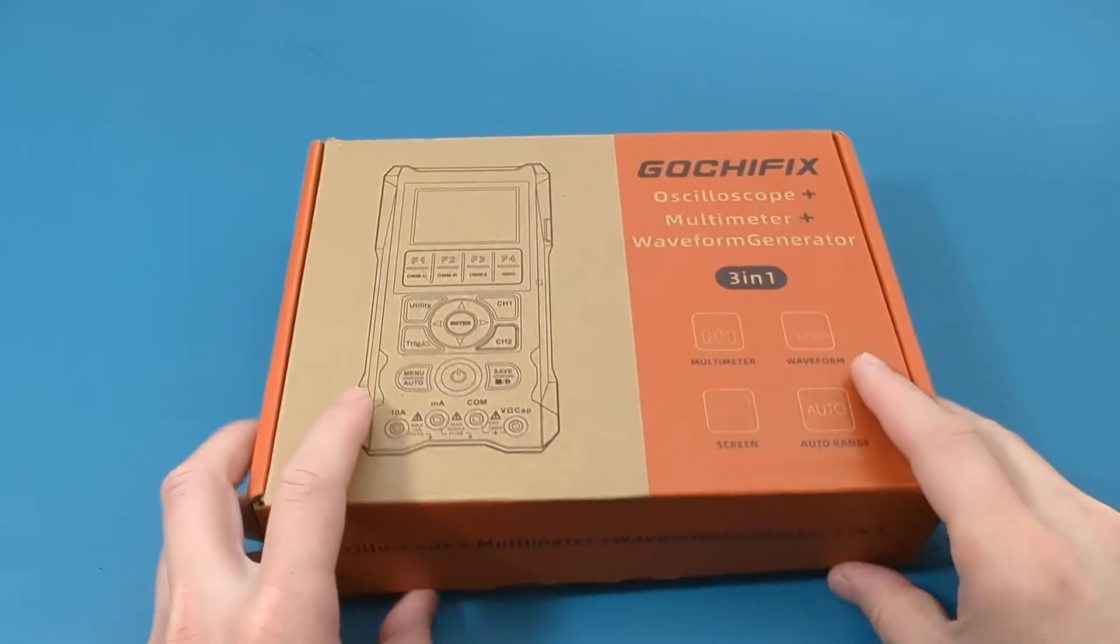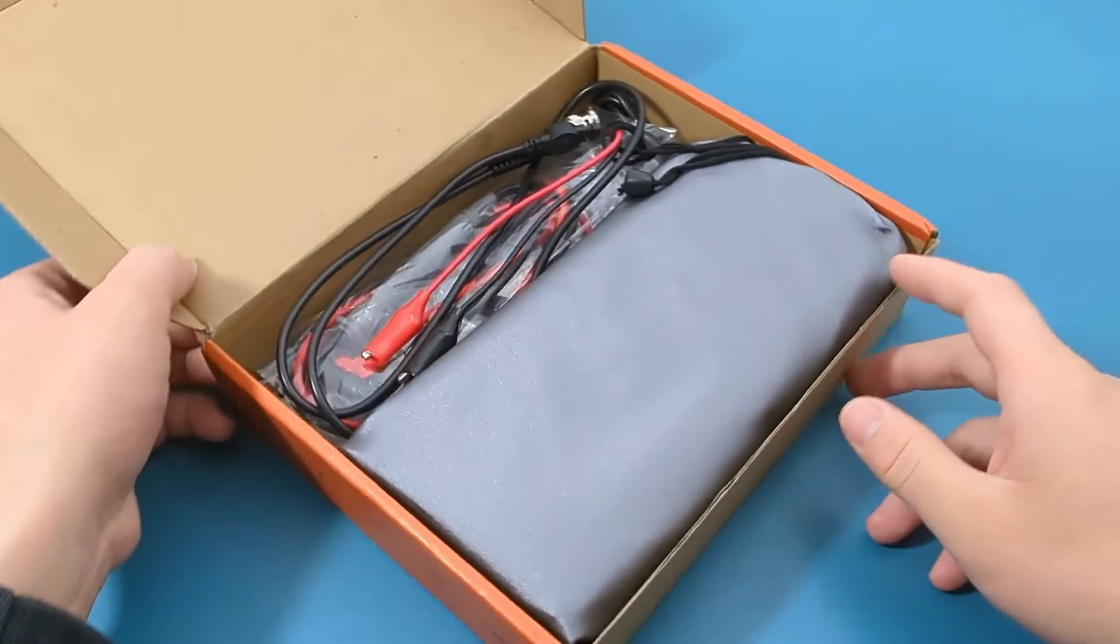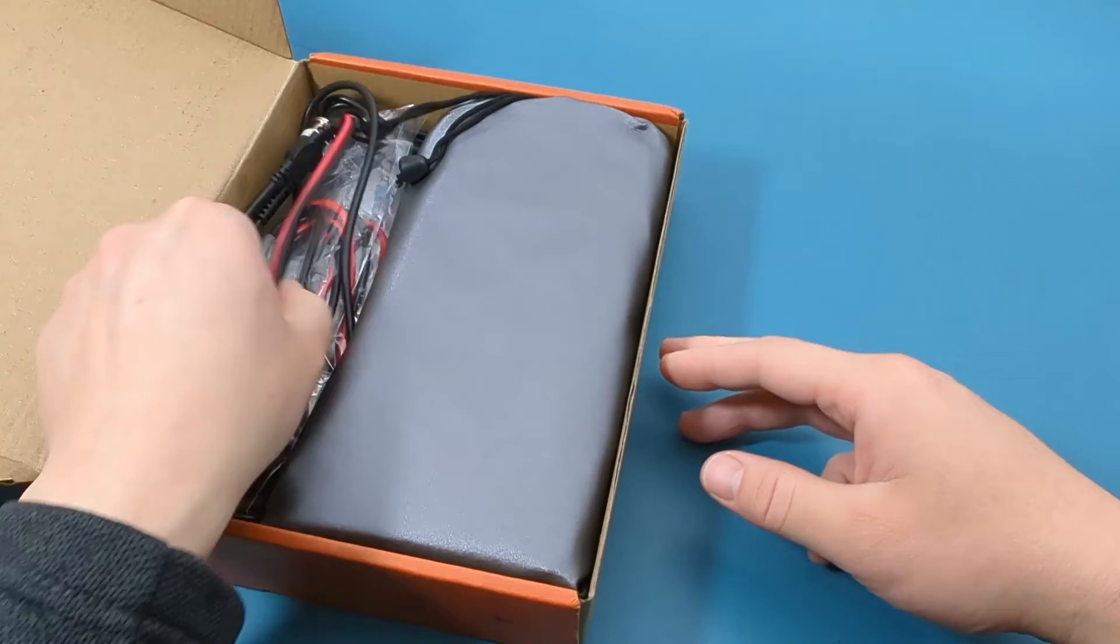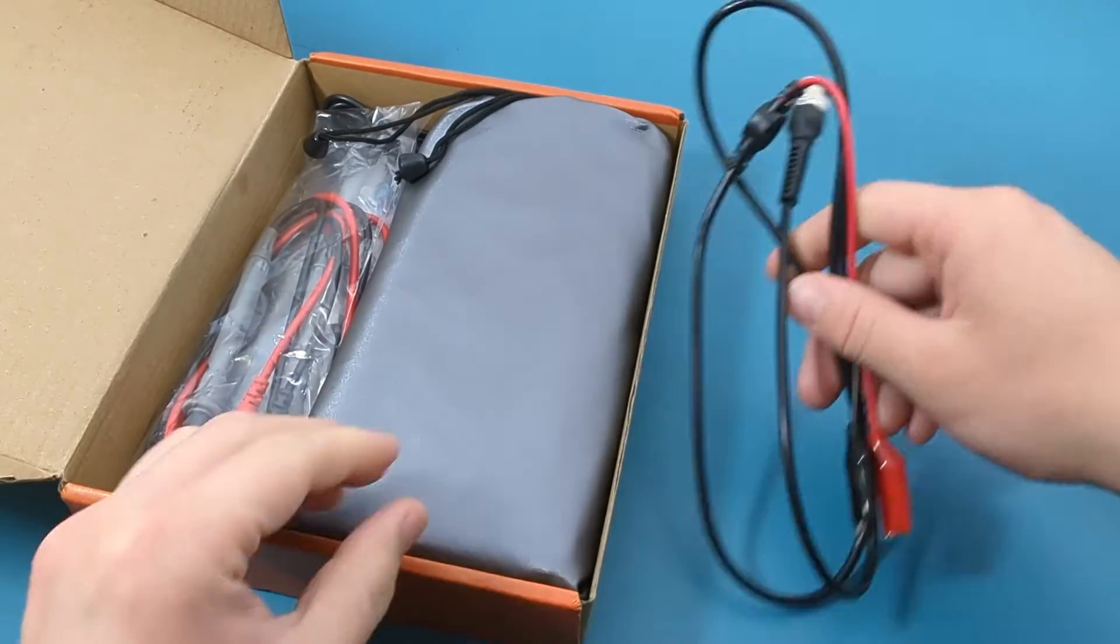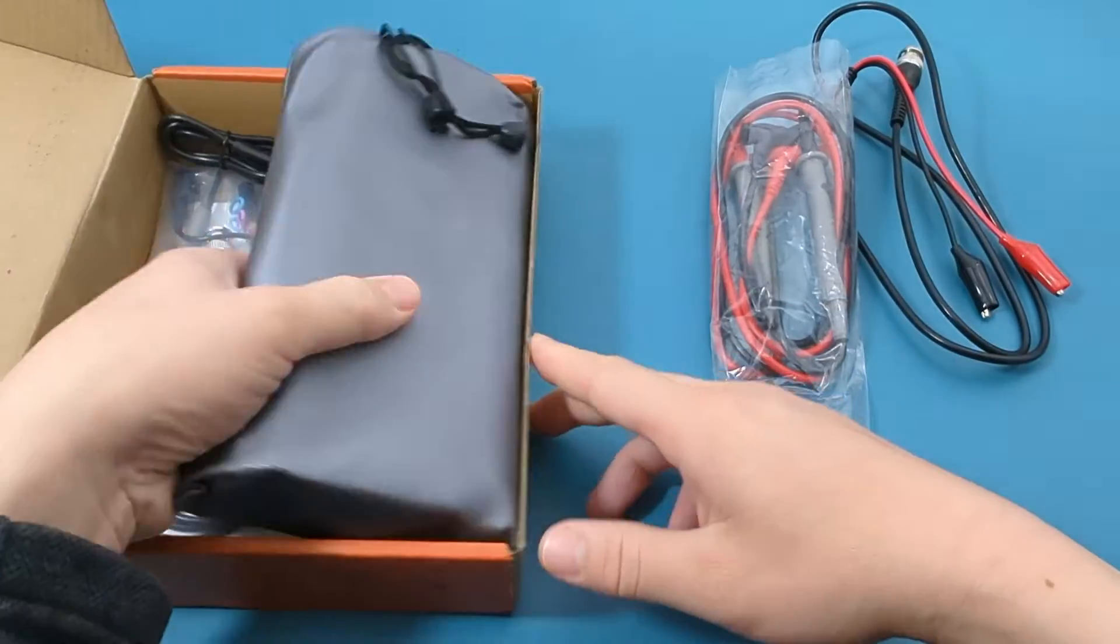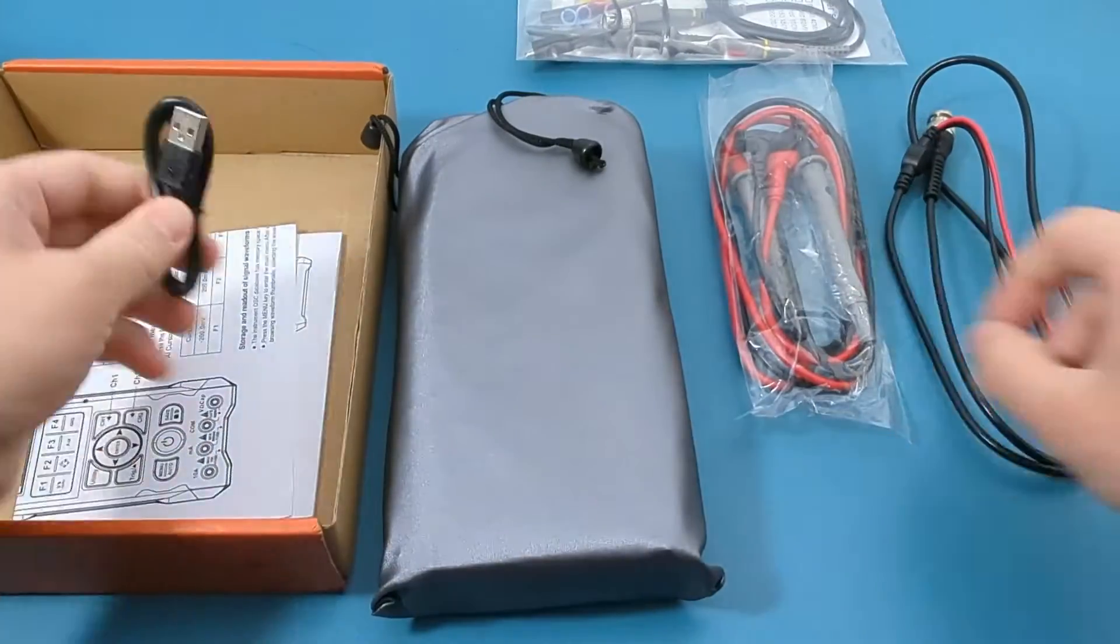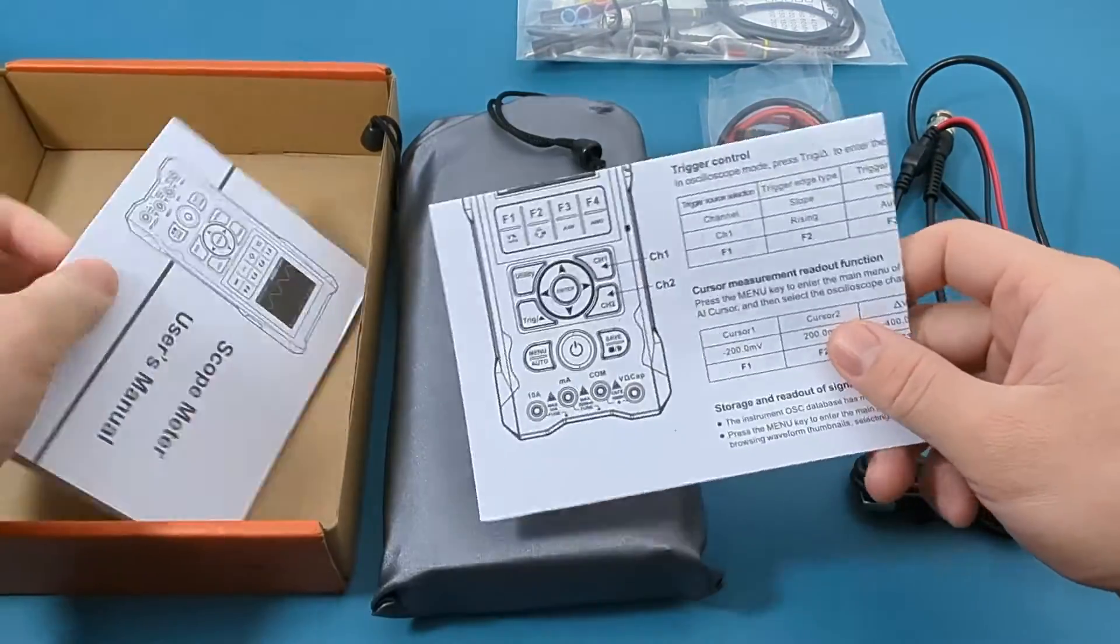The oscilloscope multimeter is available through the link provided in the video description. The box includes an alligator clip probe, two probe leads, the oscilloscope multimeter with a portable bag, a high voltage probe set, a Type-C cable, an operation instruction diagram, and a user manual.